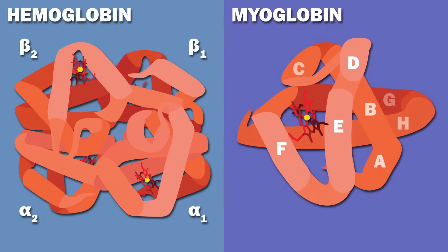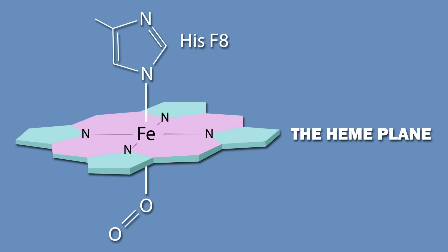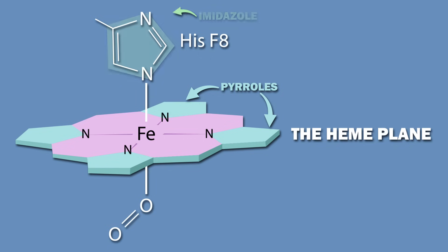The iron in each heme group is the part of both proteins that binds to oxygen. Iron can interact with six ligands: four are provided by the nitrogen atoms of the pyrrols in the porphyrin ring, and a fifth is provided by the imidazole side chain of histidine F8.